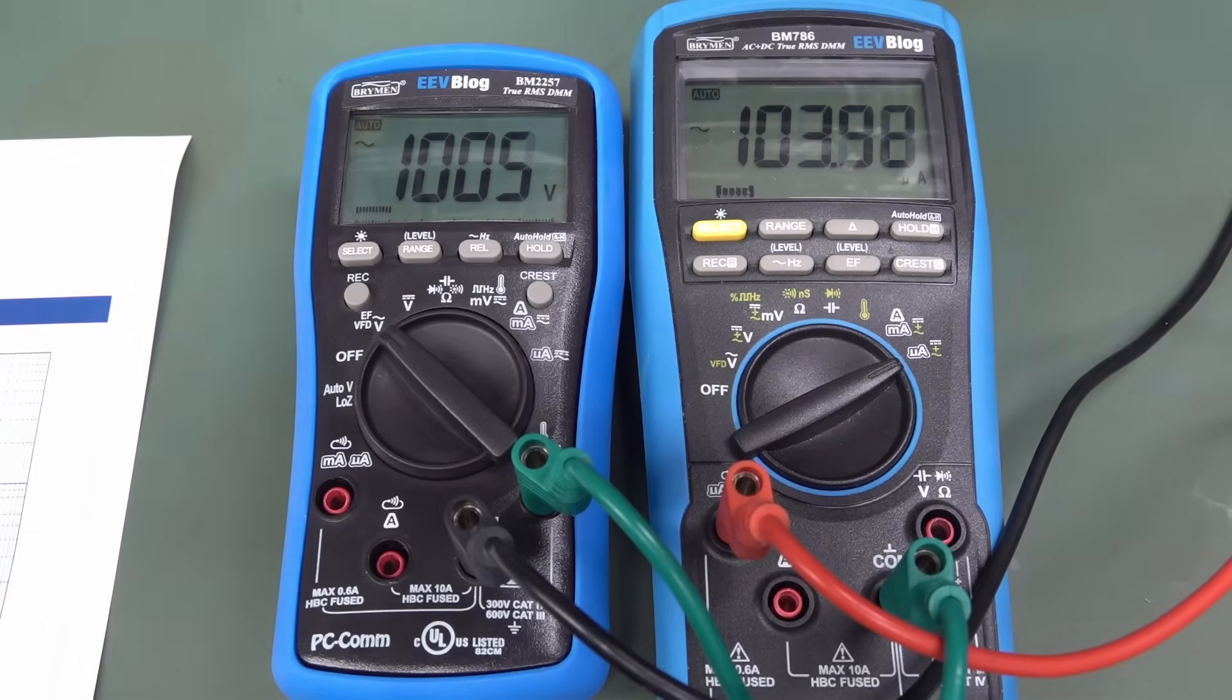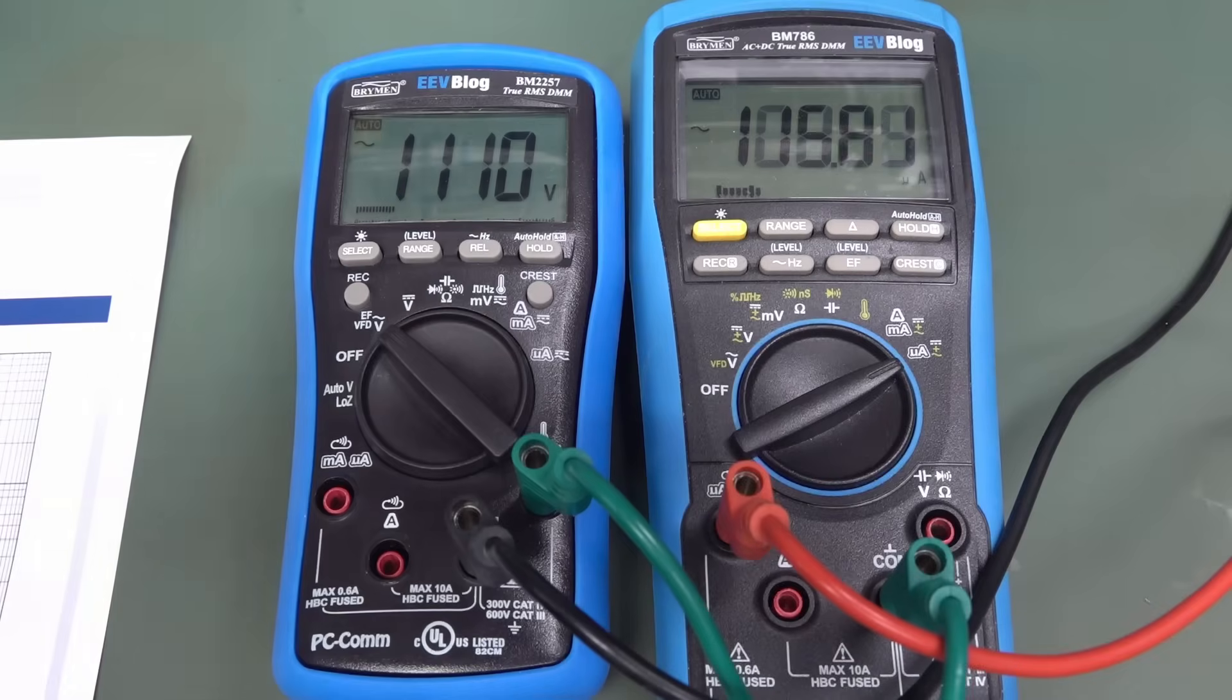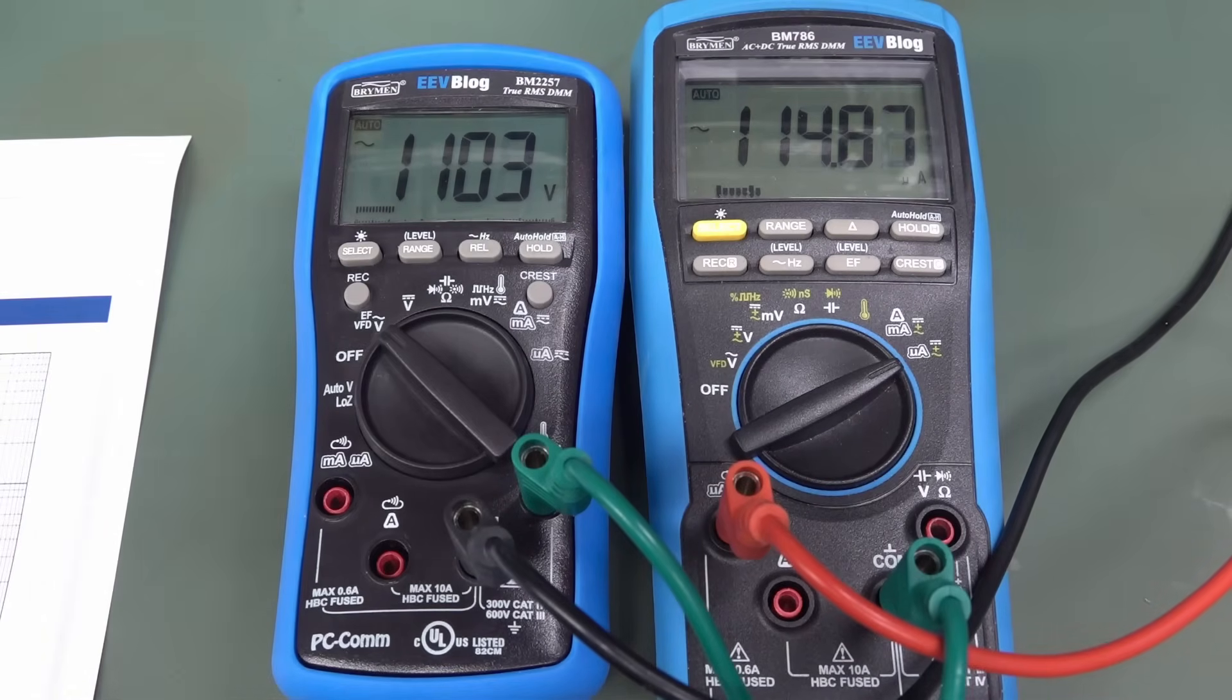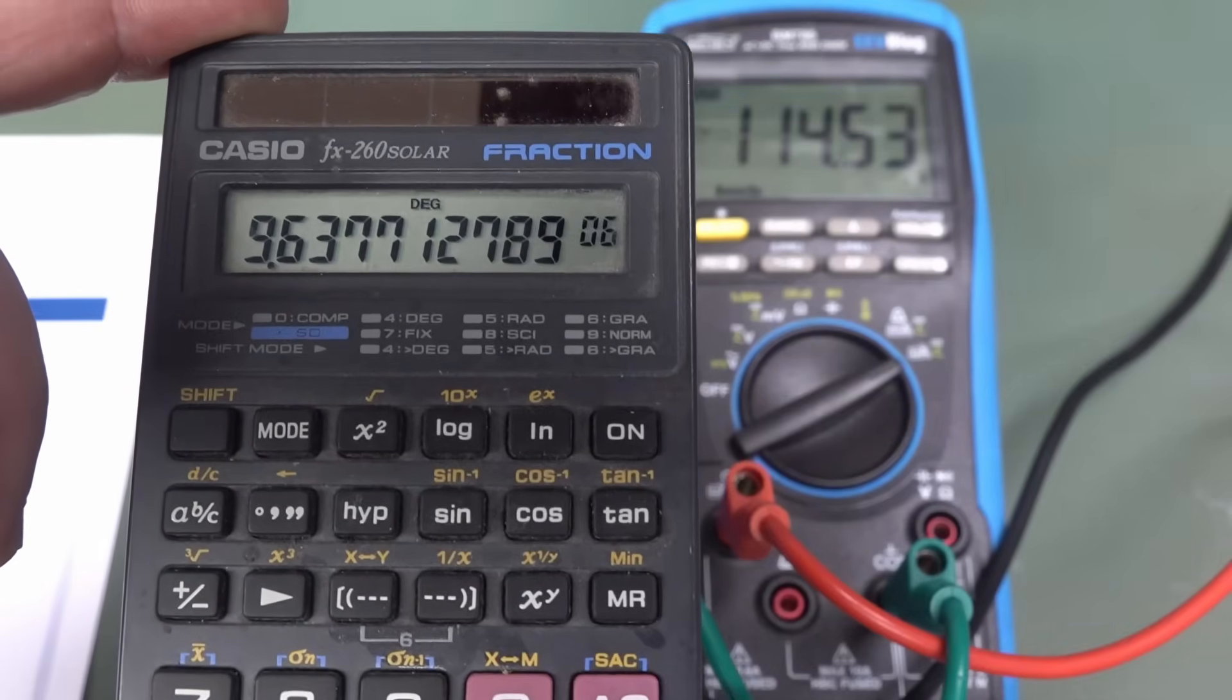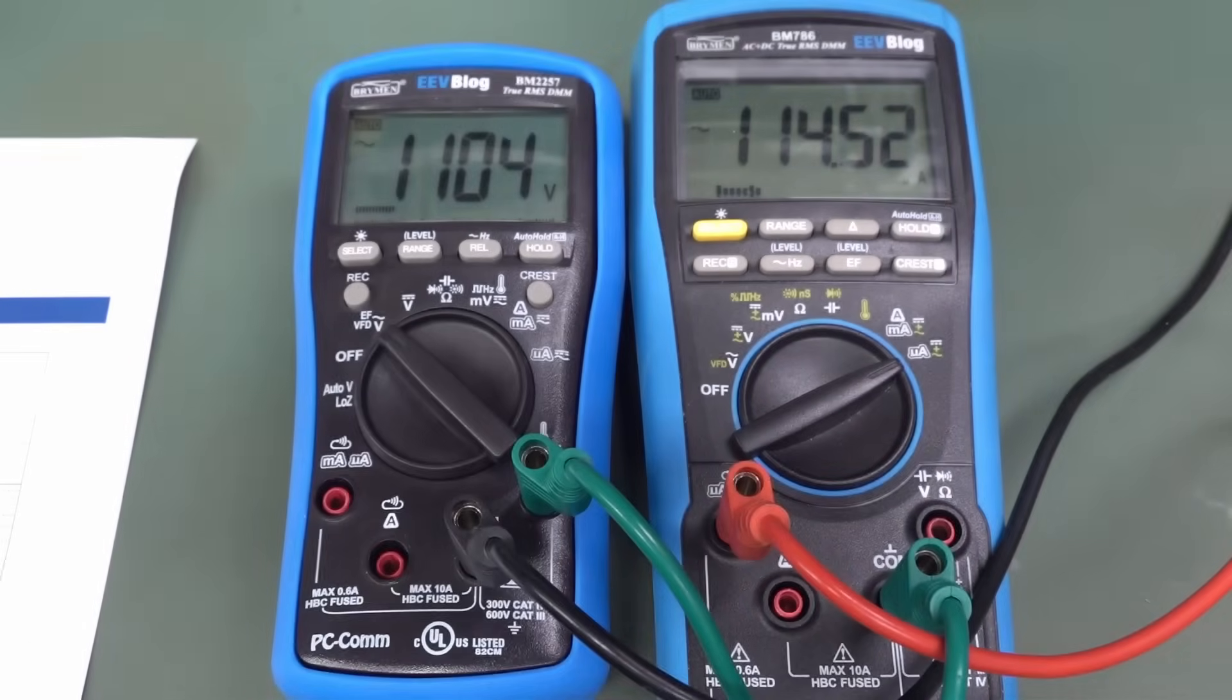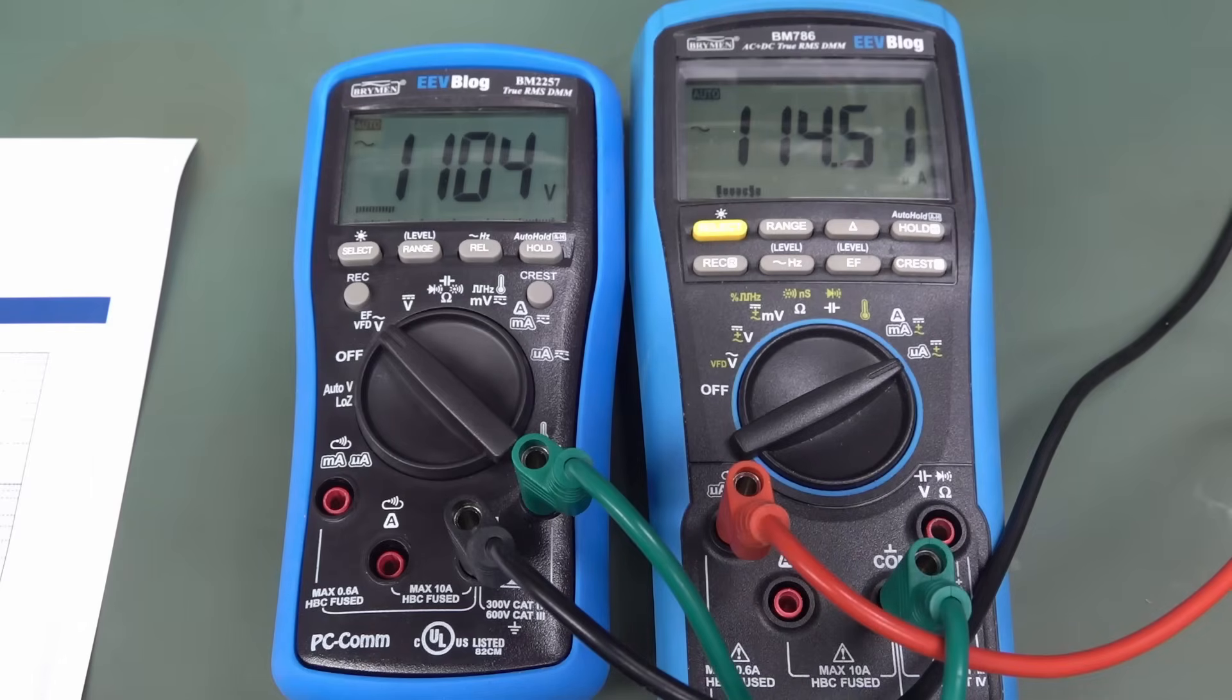So, 1000 volts AC. 104 microamps. Oh, 103.6. There you go. 1100 volts AC. For those curious, that is 9.63 megs. So, still not a big deal at all. No worries. Catch you next time.